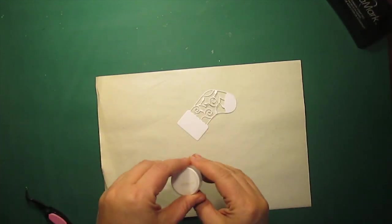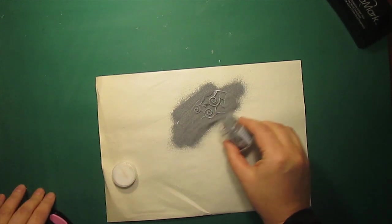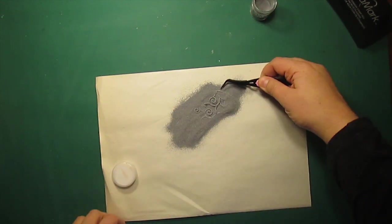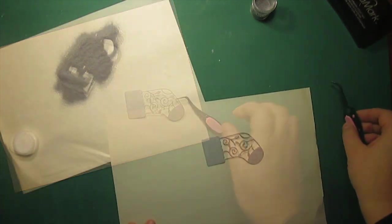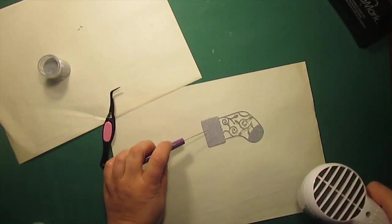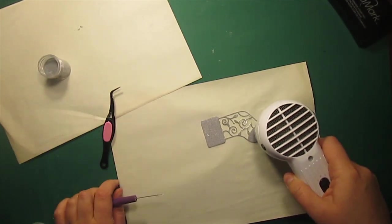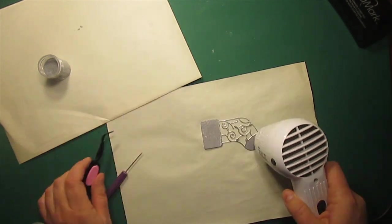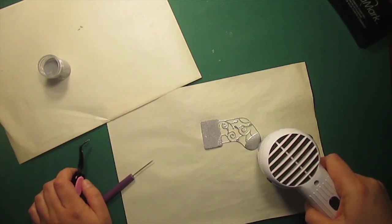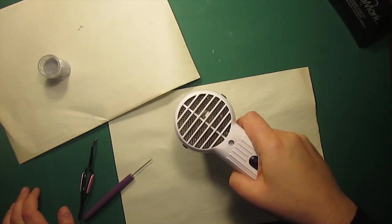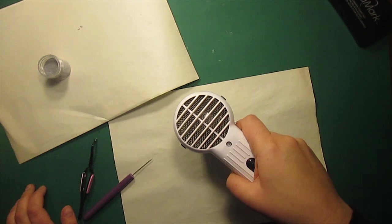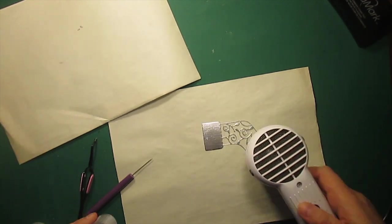I am now applying VersaMark ink all over this image and then I'll be silver embossing it. If you are interested in the supplies I am using, they are all listed in the description for this video as well as on my blog. I am going to apply at least two layers of embossing powder. This will give me more dimension and also reinforce the die-cut.